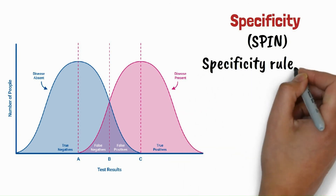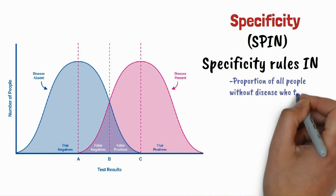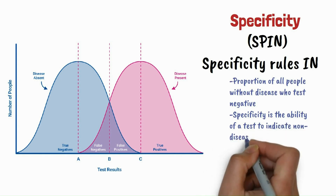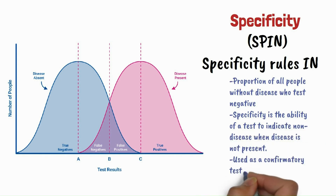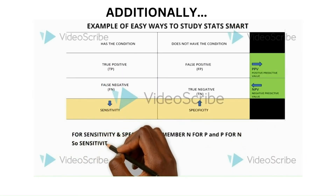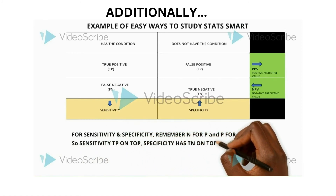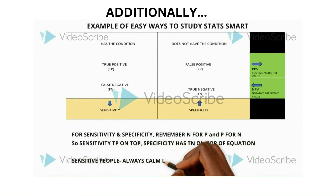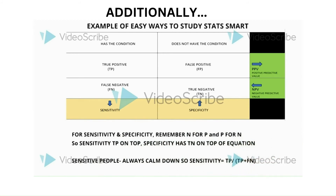SpPin — specificity rules in. Specificity is the proportion of all people without disease who test negative. It is the ability of a test to indicate non-disease when disease is not present, and is used as a confirmatory test after a positive screening test. To remember the formulas: for sensitivity, 'N for P' — true positives are on top. For specificity, 'P for N' — true negatives are on top. Think: sensitive people always calm down.